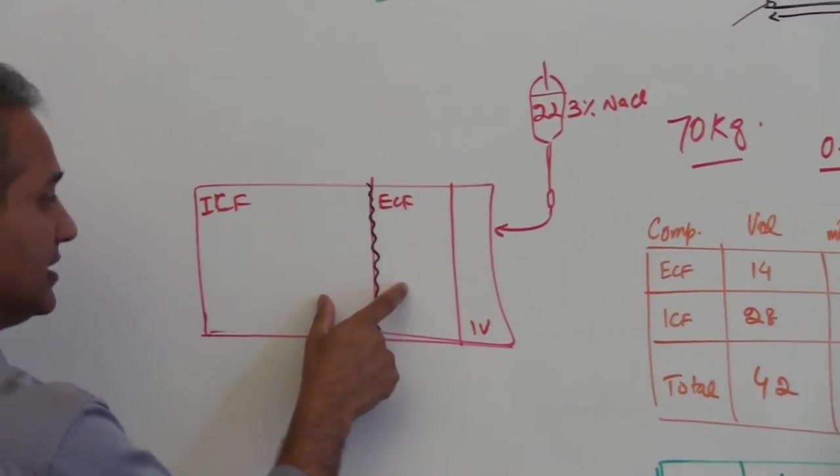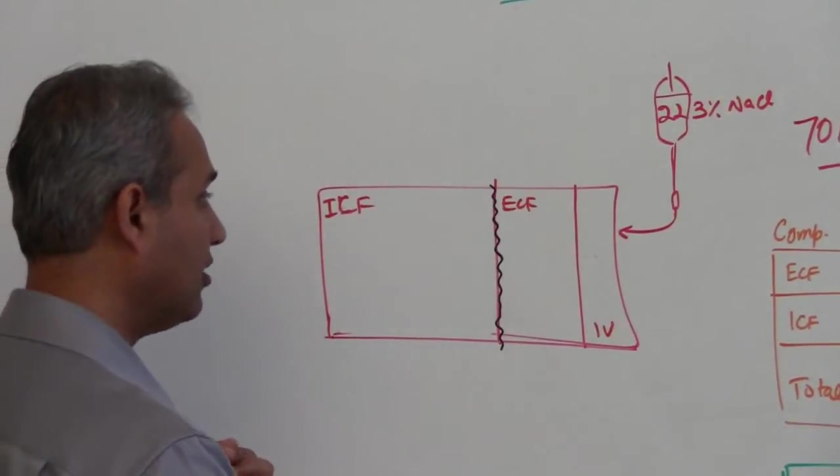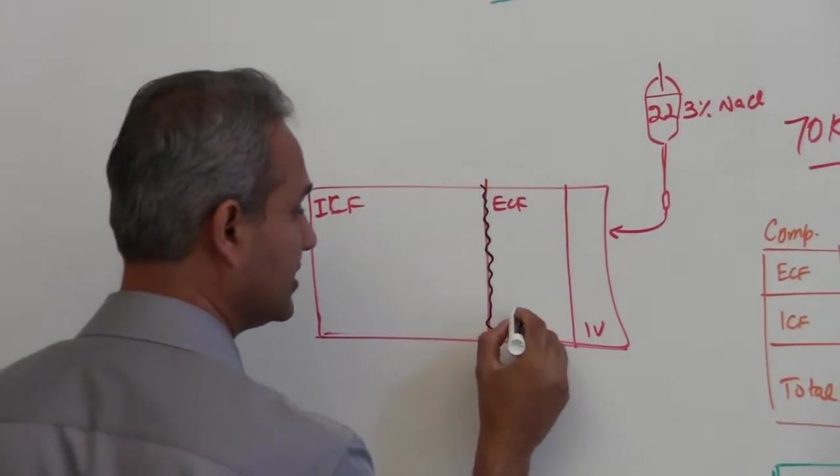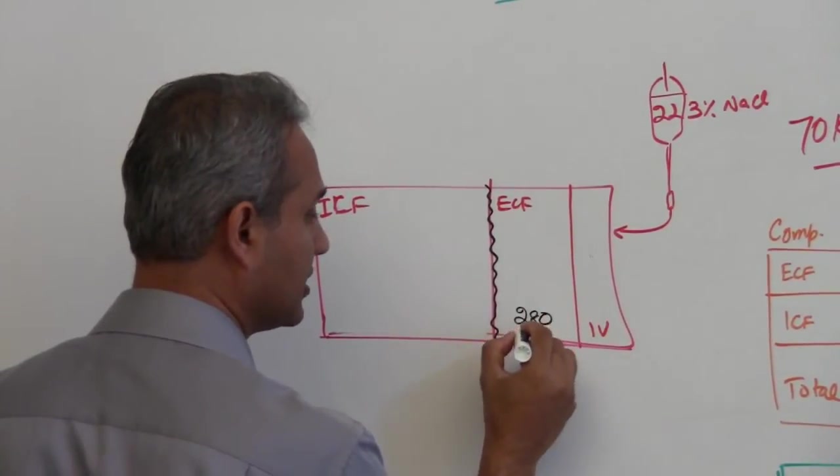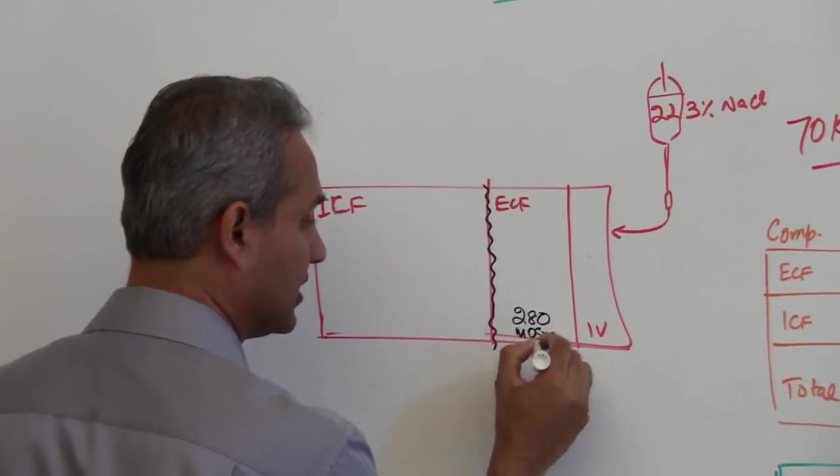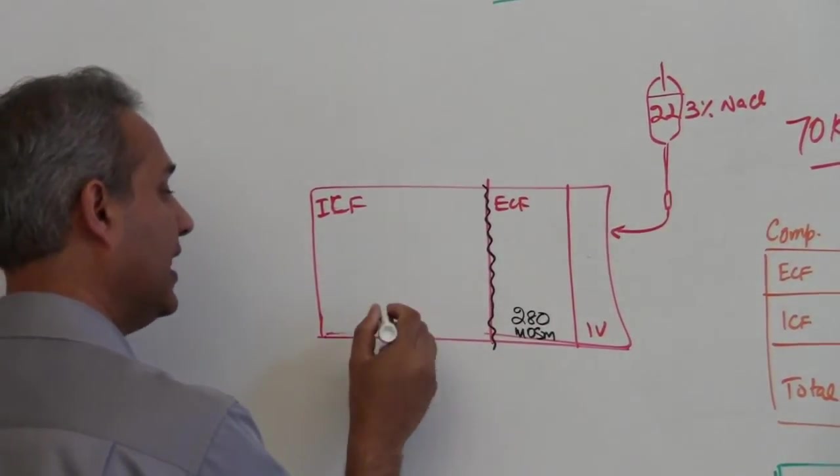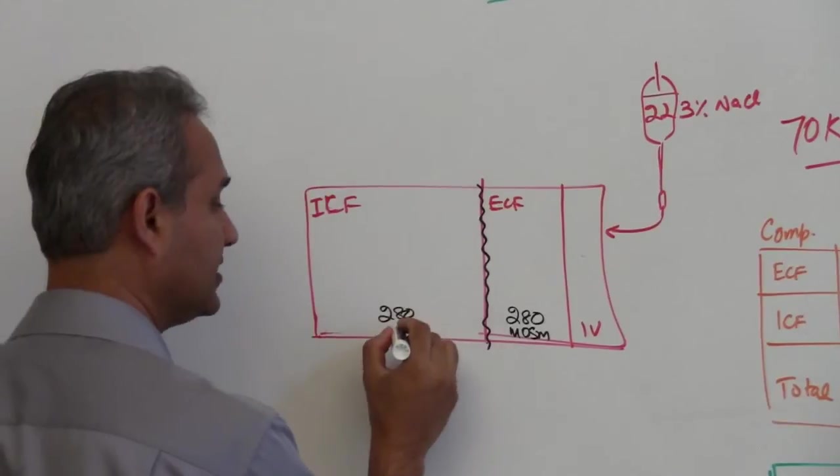Now, the osmolarity outside, so let us say it is 280, the same osmolarity has to be here as well. That is a point.